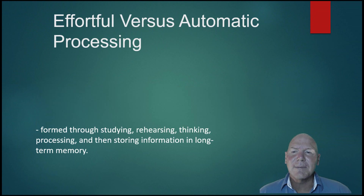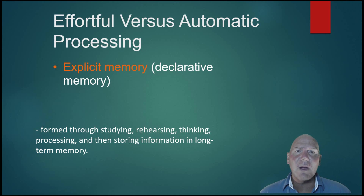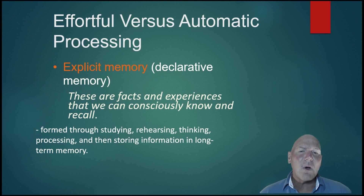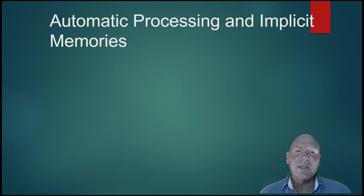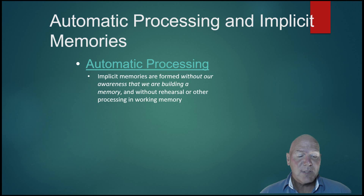Effortful versus automatic processing. Explicit memories are those memories that we can declare — we know how we learned them. Our facts, psychology vocabulary, math problems — we remember how to work those out and we know how we learned them. We can declare that type of memory; they're all the facts and experiences we can consciously recall. Automatic processing is more associated with what we call implicit memories. Implicit memories are formed without our awareness that we are building a memory, and without rehearsal or other processing in working memory.